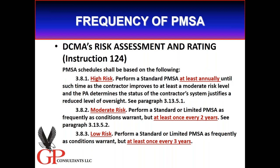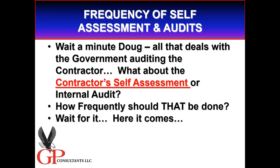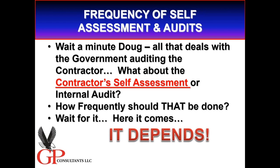DCMA tags onto that the issue of when to perform the audits. If you're high risk, at least annually. If you're moderate risk, at least once every two years — a biennial basis. Low risk: at least once every three years. So your goal should be to move to that low risk status, viewed with high esteem by your government PA. This is coming out of DOD and DCMA's guidance to its property administrators. Now, all that deals with the government auditing the contractor, but this workshop is on contractor self-assessment — so how frequently should I, as a contractor, do my self-assessment? And what do you think the next two words are going to be? It depends.